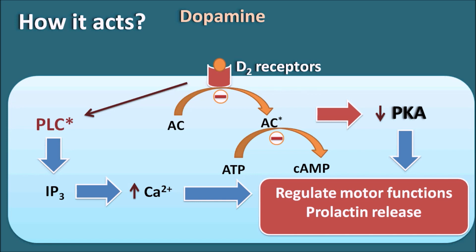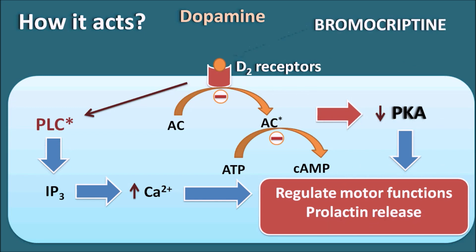In such situations, we can give Bromocriptine. It acts as a dopamine agonist and binds to D2 receptors, thereby improving dopamine activity — controlling motor functions and controlling prolactin release. In this way, Bromocriptine can be used in the treatment of Parkinson's disease as well as galactorrhea.